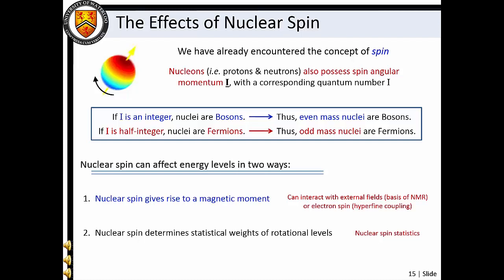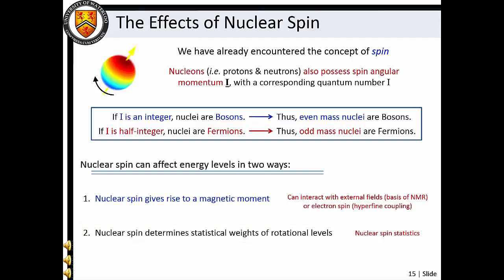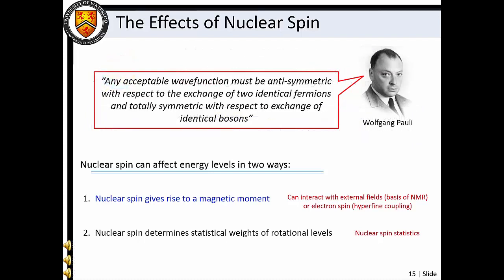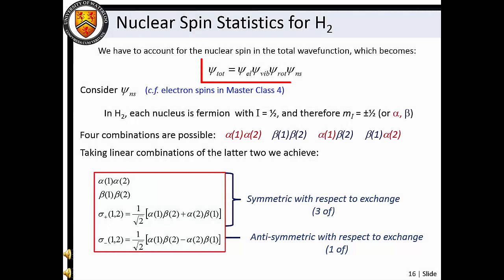Here we are interested in how nuclear spin affects the statistical weights of rotational wave functions, since molecular rotation can potentially exchange identical particles. Recall that bosons are particles with integer spin, and fermions are particles with half-integer spin. Since both protons and neutrons possess a spin angular momentum of i=½, we find that even mass nuclei are bosons and odd mass nuclei are fermions. Recall the Pauli exclusion principle: any acceptable wave function must be anti-symmetric with respect to the exchange of two identical fermions, and totally symmetric with respect to the exchange of identical bosons. The importance of nuclear spin is apparent when we view the total wave function as a product of the electronic, vibrational, rotational, and nuclear spin wave functions.